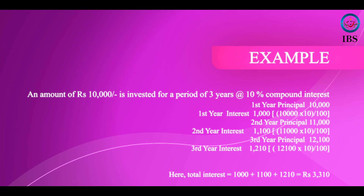Now, coming to compound interest. Suppose the same amount, 10,000 at the rate of 10%, is put at compound interest. The first year interest is 1,000 rupees because 10% of 10,000 rupees. In the second year, this 1,000 is added to the principal and the depositor gets interest for 11,000 rupees. So the principal becomes 11,000 and the interest is 10% of 11,000, that is 1,100. In the third year also, the interest is added to the principal and he gets interest on that interest. This is the basic difference between simple interest and compound interest.